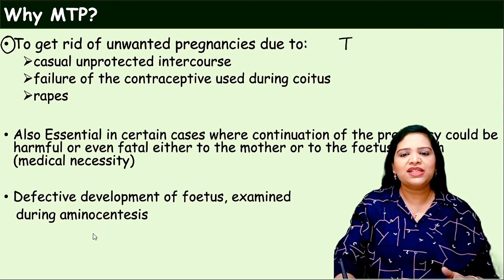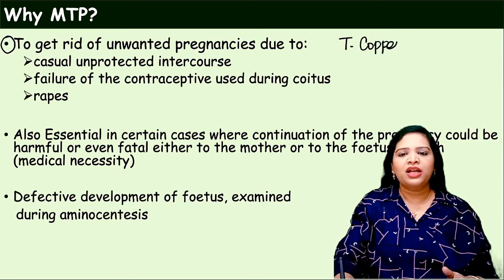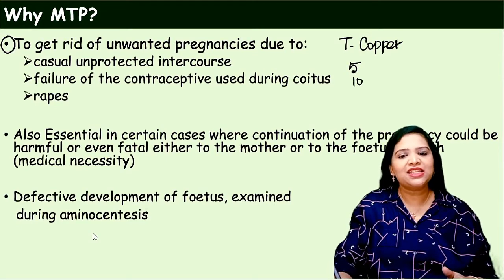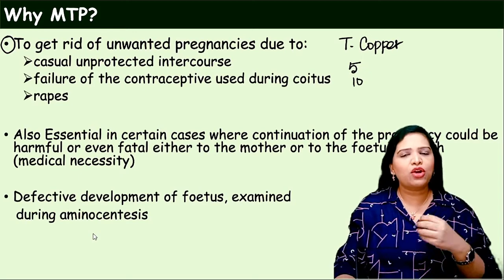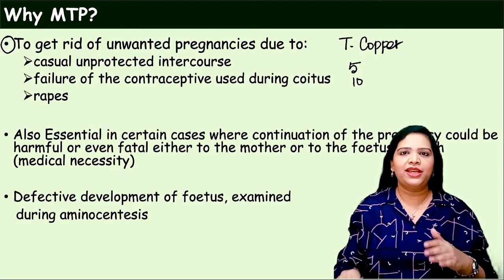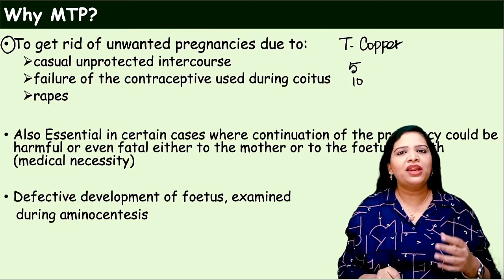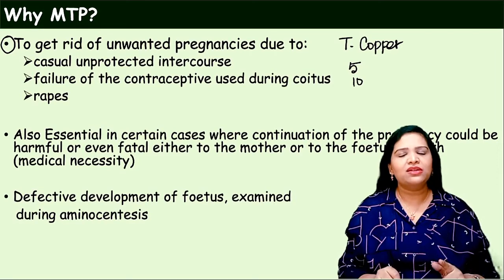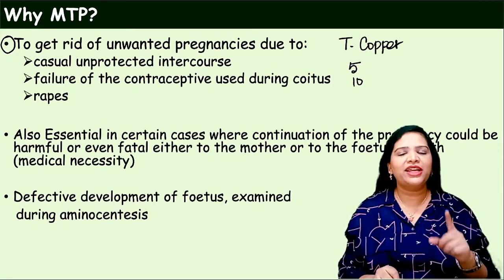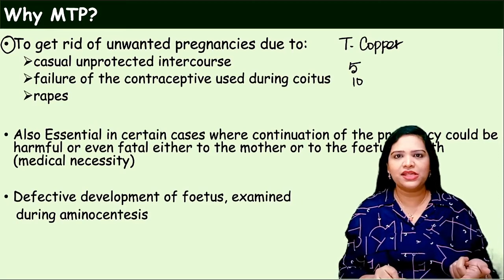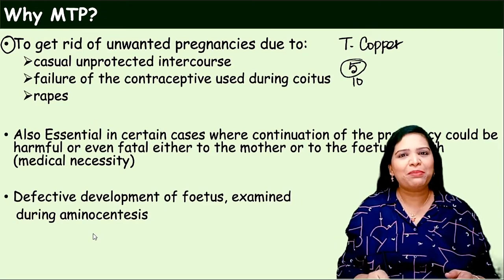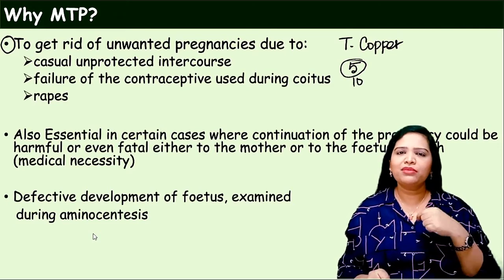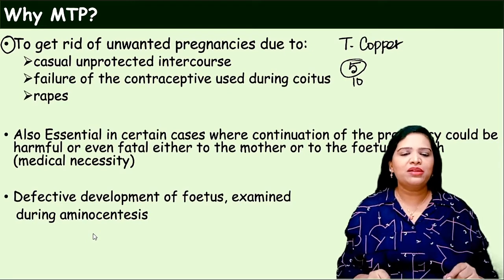For example, intrauterine devices like copper T have an expiry date — five-year copper T or ten-year copper T. Until five years, the copper molecules are released and it works well. After five years, the concentration of copper molecules is reduced. The woman should compulsorily remove her intrauterine device and insert a new one. If not done, the expired device will fail and she will become pregnant.